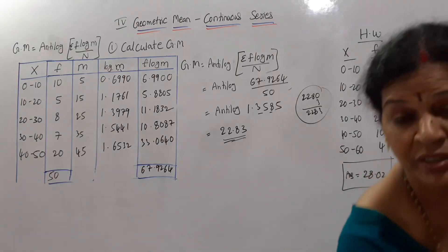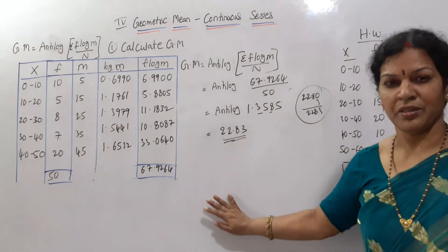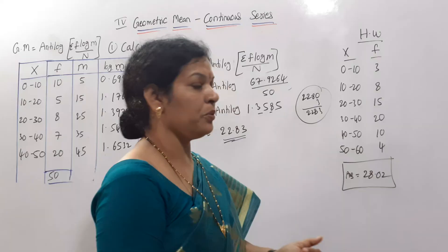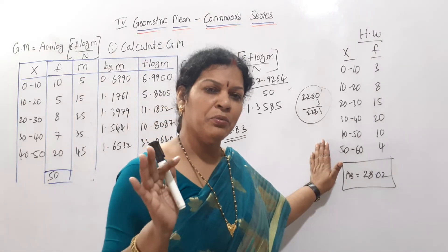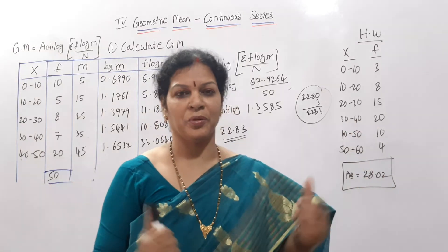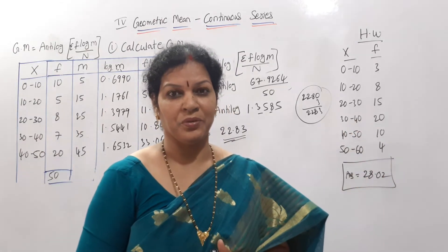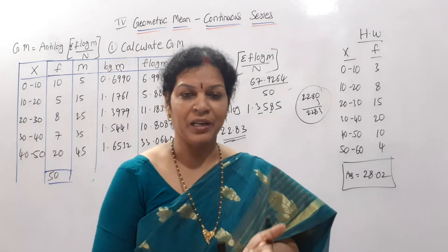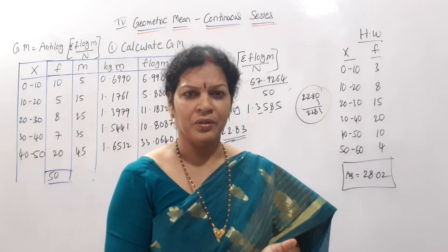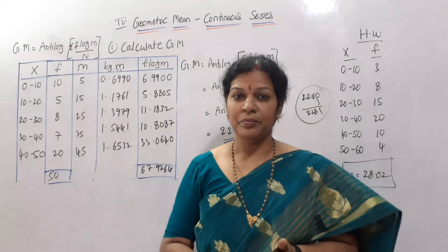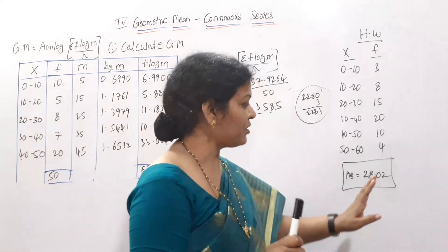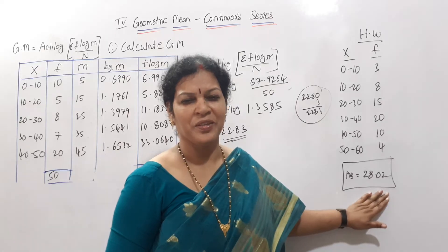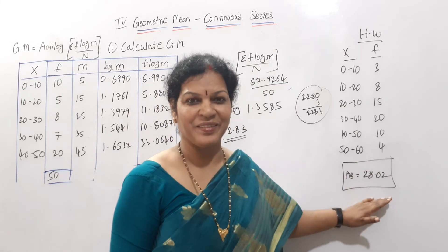Are you clear? Did you understand? If yes, work out the same problem once again without looking at the solution. If you are thorough, there is also a homework problem. A new problem is given with x values and frequency. Following the same method — find mid value m, then log m, then frequency into log m, and apply the formula — your answer must be 28.02. If you get this answer, please write it happily in the comment box.